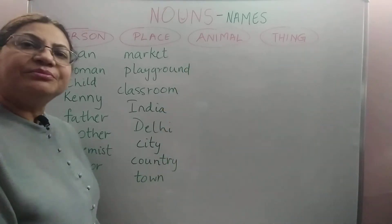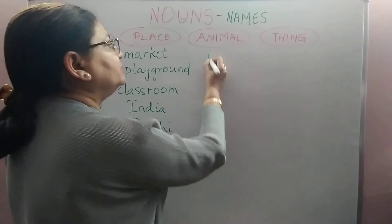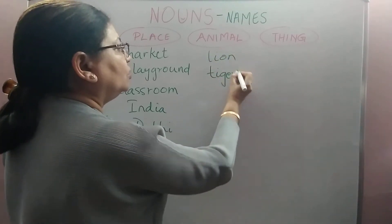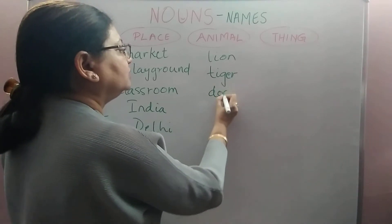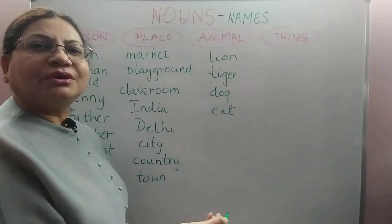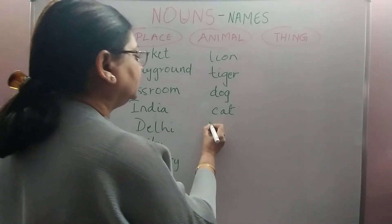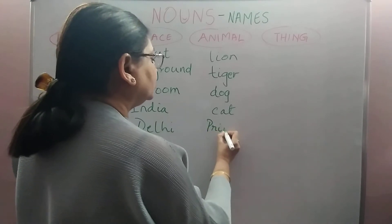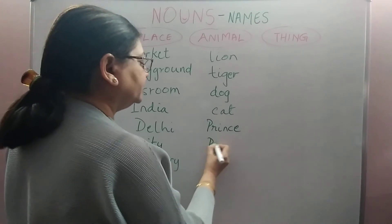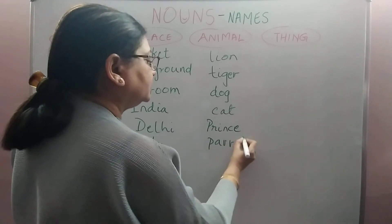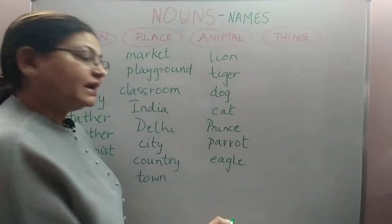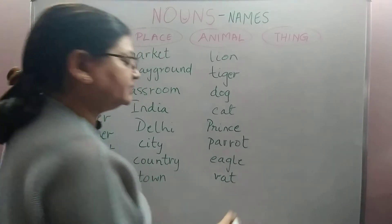Then we come to the names of animals. Names of animals can be like a lion, a tiger, or it could be your pet dog or cat. Or it could be the name that you have given to your pet dog or cat — for example, you can call your dog Prince. Or it could be the name of a bird, for example parrot or eagle. Or even a rat — a rat is also an animal and it is a noun.